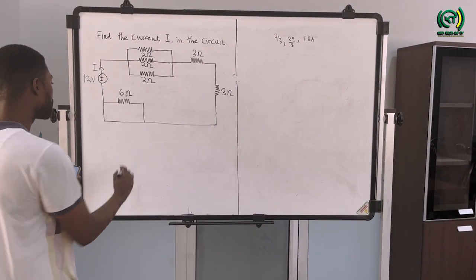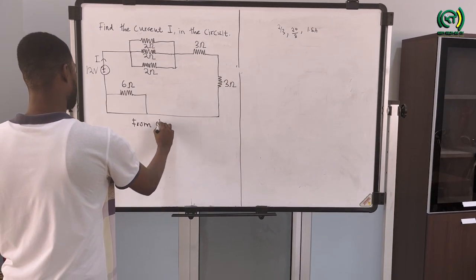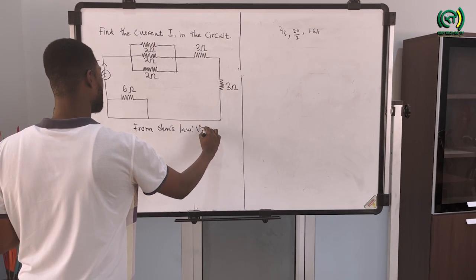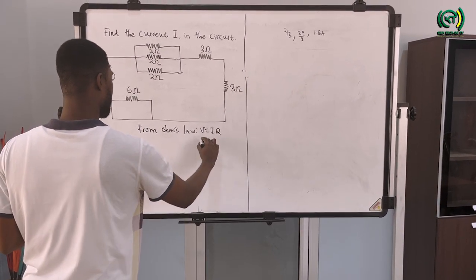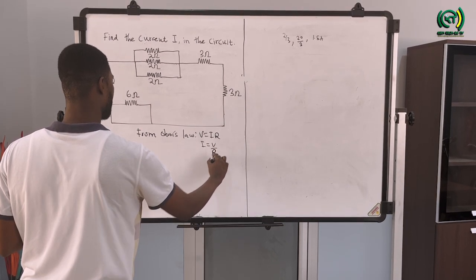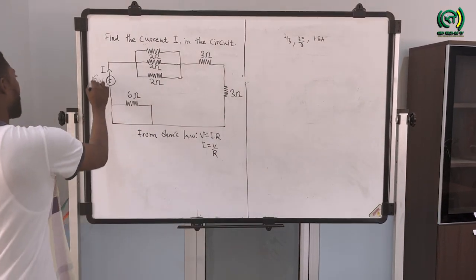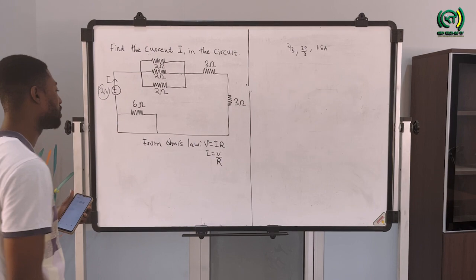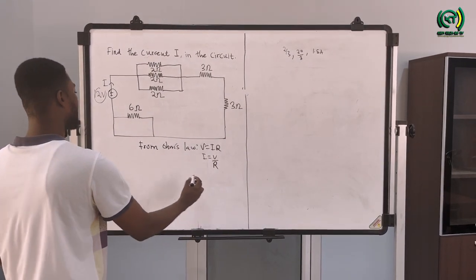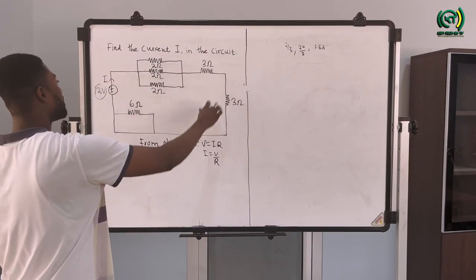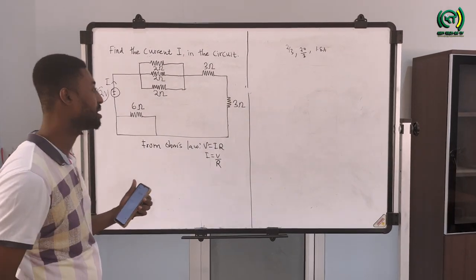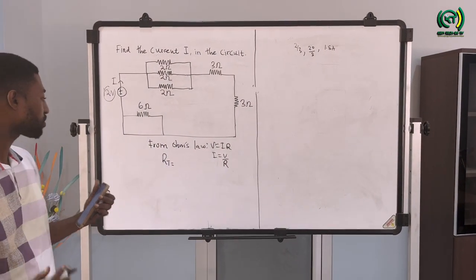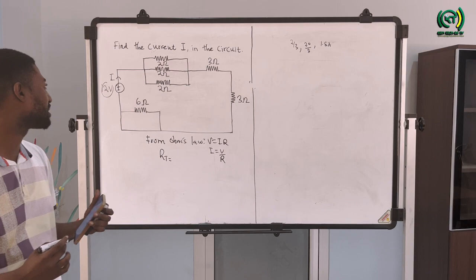In calculating for the current from Ohm's law, I know that V equals IR, therefore I will be equal to V over R. In the question I know my voltage, but to calculate the current I also need my total resistance. This total resistance can be calculated by simplifying the whole resistance which is connected in either series or parallel. R represents the total resistance in the circuit.